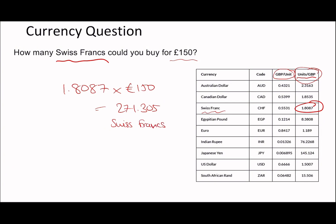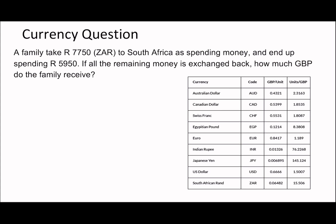Not too difficult — just a straightforward conversion. You can double-check: the pound is a strong currency, so Swiss francs is less strong, meaning you're going to need more Swiss francs to equal the same amount. We've gone the right way. The units-per-GBP column tells you how many Swiss francs you get per pound, and the GBP-per-unit column tells you how many pounds you get per Swiss franc.